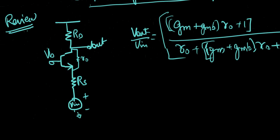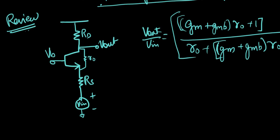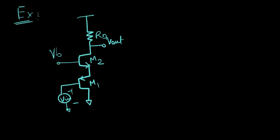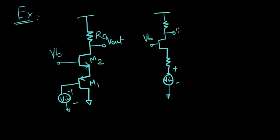Based on this, we have to calculate the gain of a given circuit that looks like this. So on comparing this with what we just saw — VB, Vout, RD, RS — we have everything from here to the top. Everything is similar.